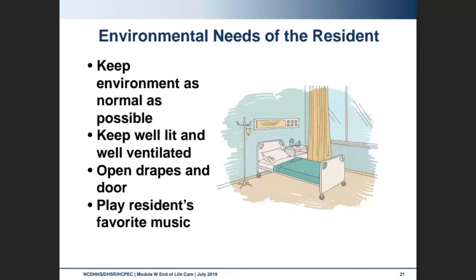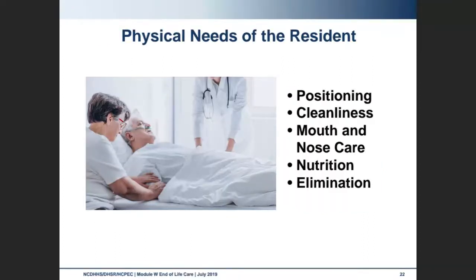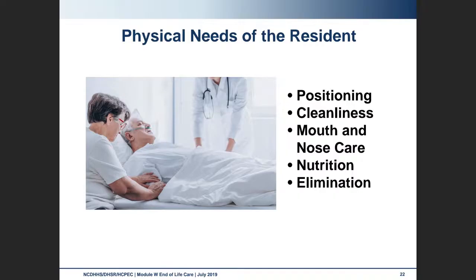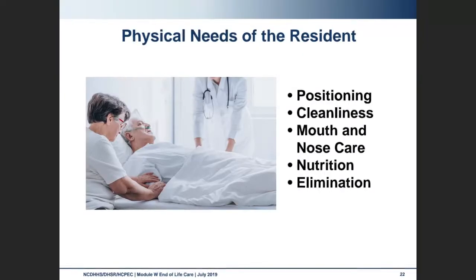Regarding environmental needs of the resident who is dying, we want to keep the resident's environment as normal as possible — a well-lit, well-ventilated room. We can open doors and drapes, play the resident's favorite music. We want to make sure they're positioned in the most comfortable position possible for breathing and avoiding pain, by maintaining body alignment and changing positions frequently, at least every two hours or more often as needed. Cleanliness is important, including skin care, back rubs, bathing, and grooming. Mouth care and nose care include cleaning sores or bleeding in the mouth — always follow standard precautions. Providing oral care as needed may include covering lips with a thin layer of petroleum jelly, checking for difficulty swallowing or choking, cleaning the nose, and offering drinking water as often as possible. Mouth care is one of the most overlooked skills, and it's really important.